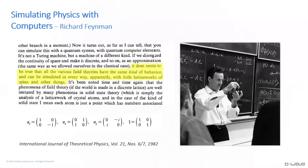Feynman observed that if you take quantum systems in nature — systems of electrons, quarks, atoms, molecules — and you try to simulate them on a classical computer, and in those days all we had was classical computers, these simulations were painfully slow. In fact, they were so slow that really all but the smallest quantum systems cannot really be simulated effectively.